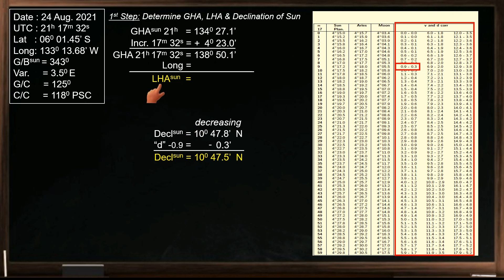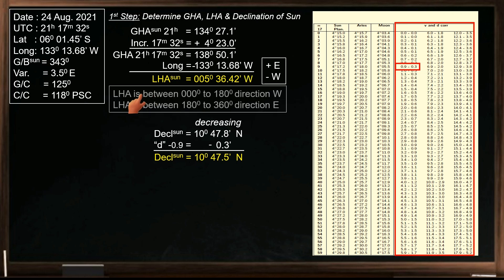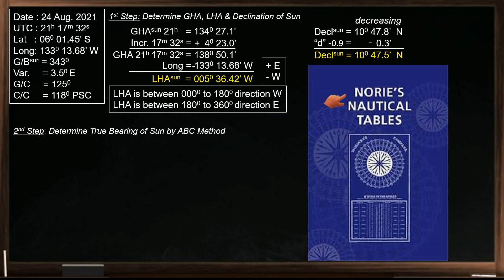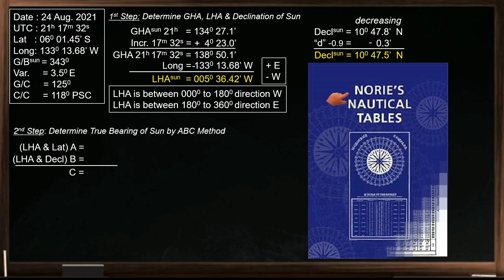Our second step is to determine the true azimuth, or true bearing of the sun, using the ABC method. To do this, we'll need Norie's nautical tables. First, tabulate the value of A using LHA and latitude. In the nautical tables, open table A. On top you can find the hour angle, and on both sides the latitude.